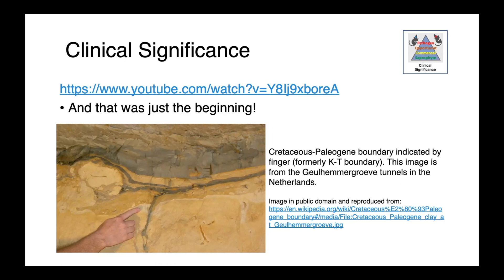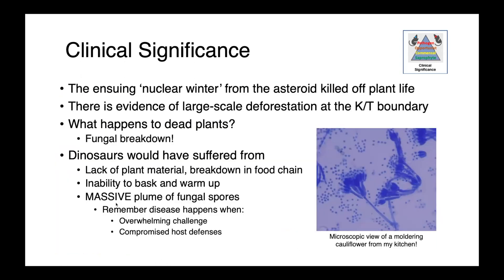That asteroid impact was really just the beginning. The ensuing nuclear winter killed off all the plant life, locked out the sun, and we have evidence of a large-scale deforestation event at the KT boundary. Dead plants break down — fungi eat them, cycling the nutrients locked up in that plant material. Dinosaurs living at the time would have suffered from a lack of plant material, a complete breakdown in the food chain, and — as possibly ectotherms — an inability to bask and warm up as we see reptiles do today.